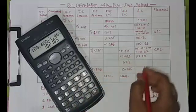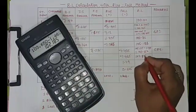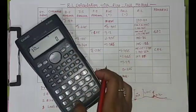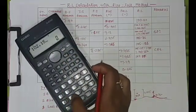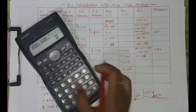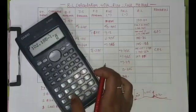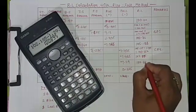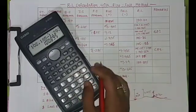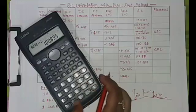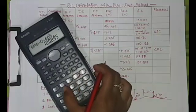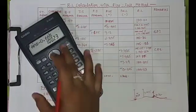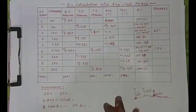103.650 minus 1.465 = 102.185. This value is again negative (fall), so: 102.185 minus 1.29 = 100.895. Again negative: 100.895 minus 0.665 = 100.230.